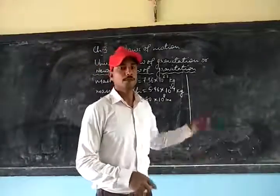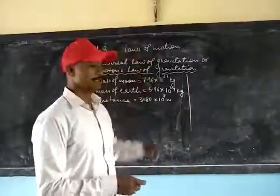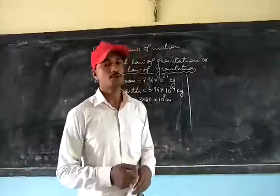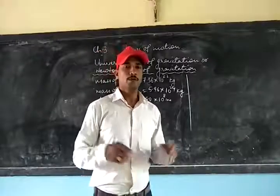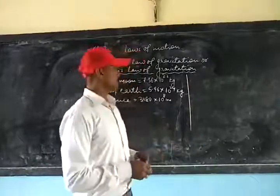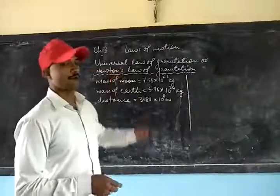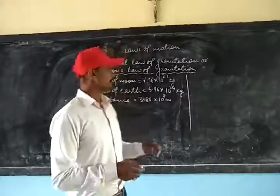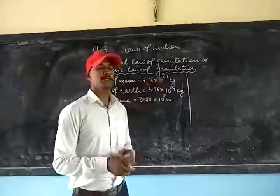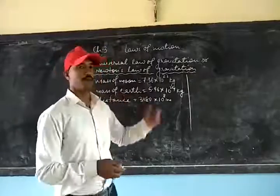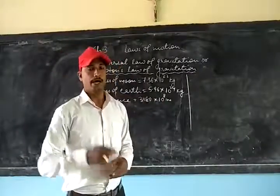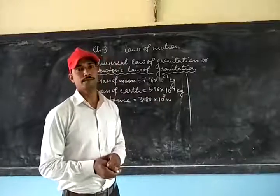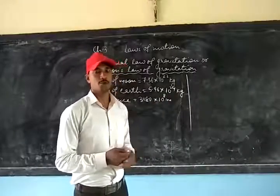Good morning students. We continue with the same topic — the Universal Law of Gravitation. Today we are going to find out the force of attraction between two bodies placed at some distance. We will take the example of the force of attraction between the moon and the earth. The mass of the moon is 7.36 into 10 to the power 22 kg, mass of the earth is 5.96 into 10 to the power 24 kg, and the distance between the moon and the earth is 3.80 into 10 to the power 8 meters.